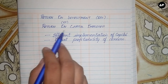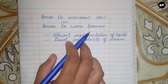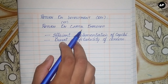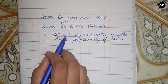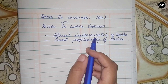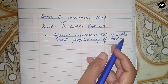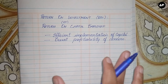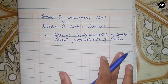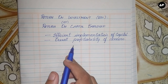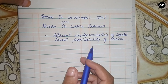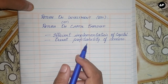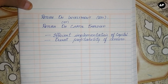Return on investment, or return on capital employed — this ratio analysis will show the efficient implementation of the capital employed in the firm, that is, how efficiently the capital invested in the firm has been used in the business. It measures the overall profitability of the concern. Next, let's see the formula for return on investment.